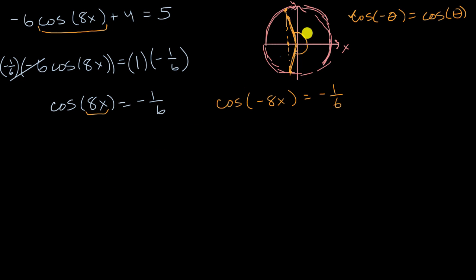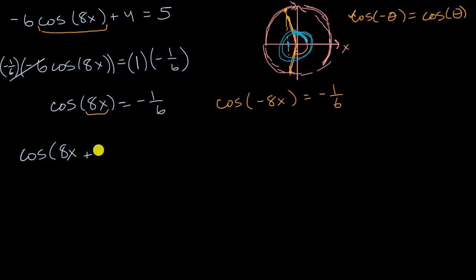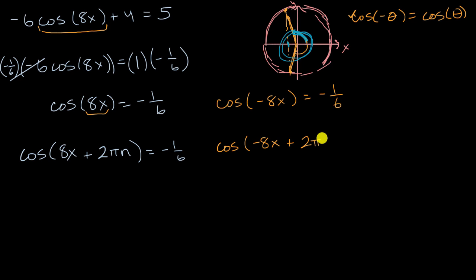The other thing to realize is that if I have some angle where the cosine gives negative one sixth, adding two pi brings me back to the same place and the cosine is again negative one sixth. I can add two pi an arbitrary integer number of times. So cosine of eight X plus an integer multiple of two pi also equals negative one sixth, and similarly cosine of negative eight X plus an integer multiple of two pi equals negative one sixth, where N is some integer in both cases. Now we can feel confident we are capturing all solutions.